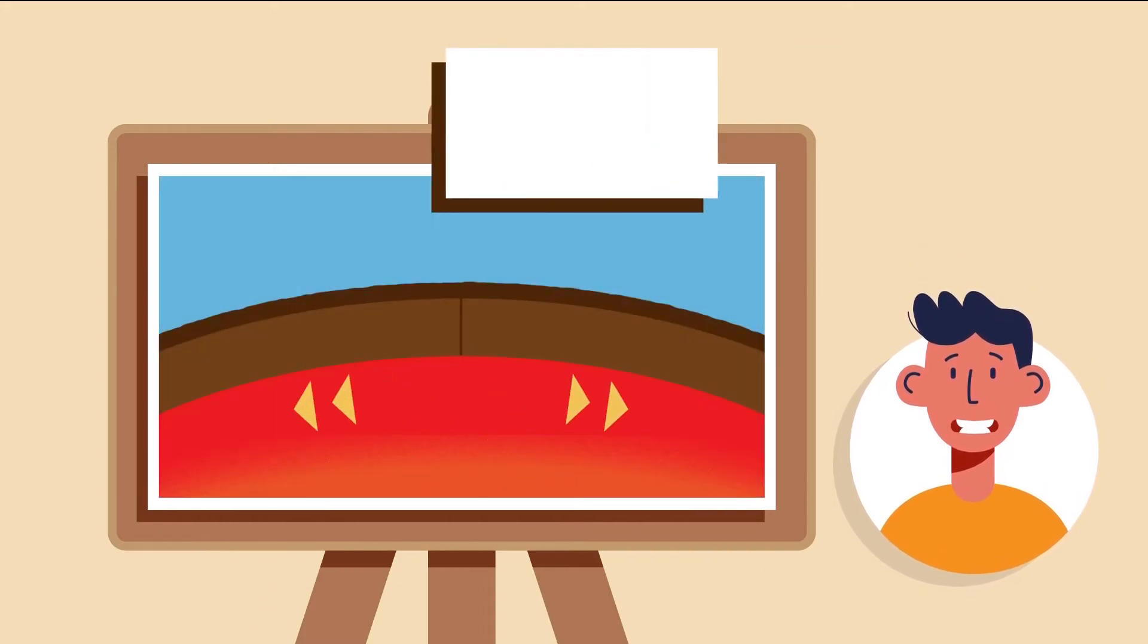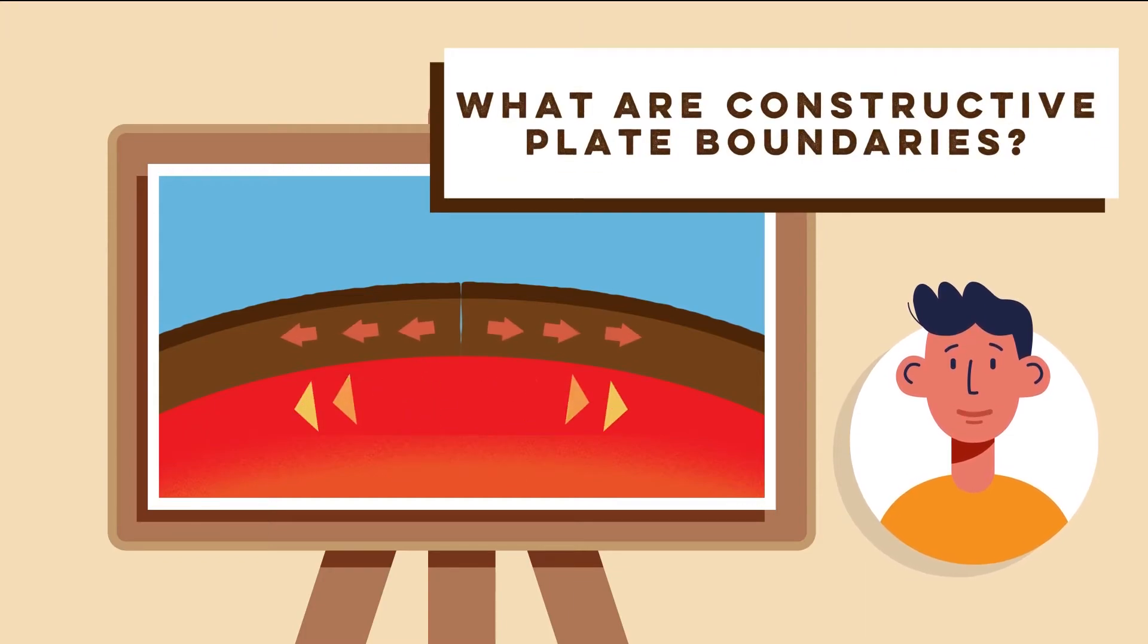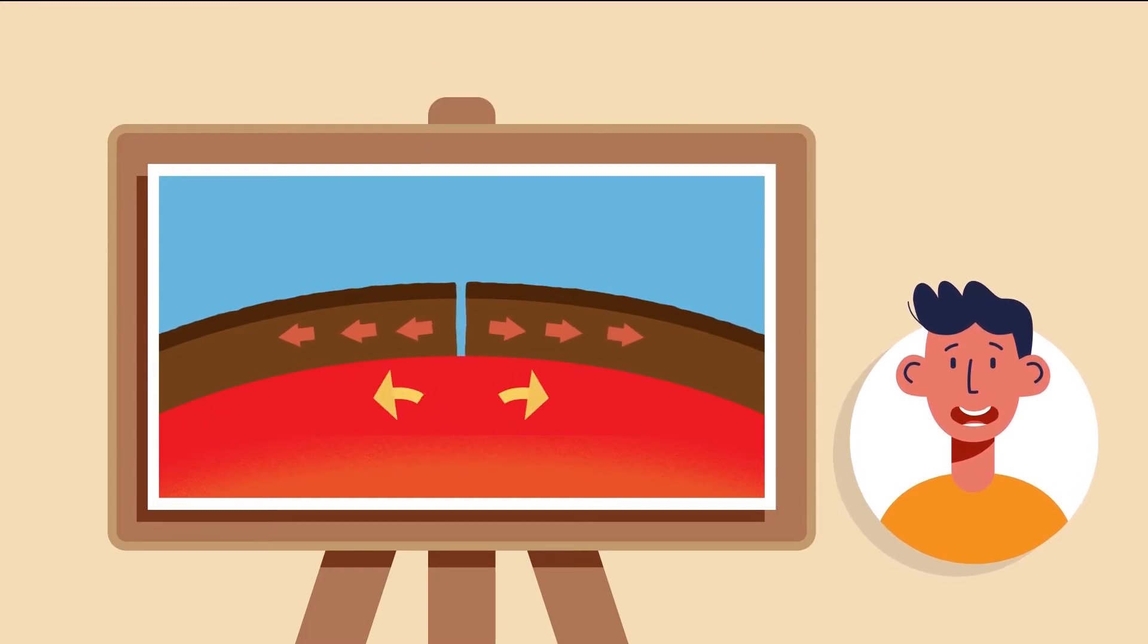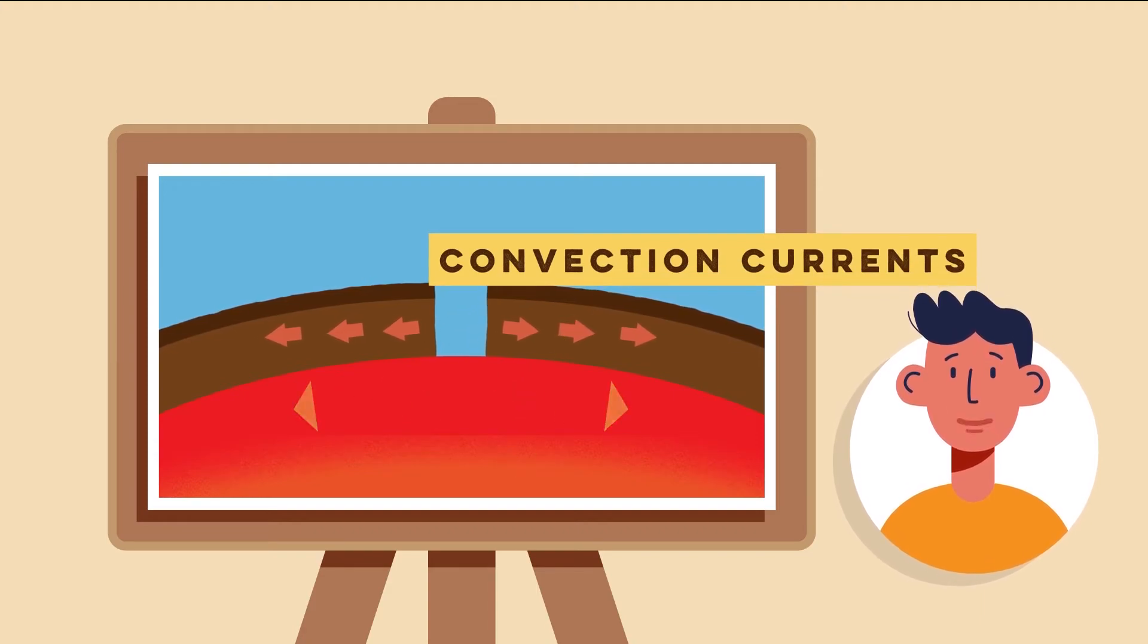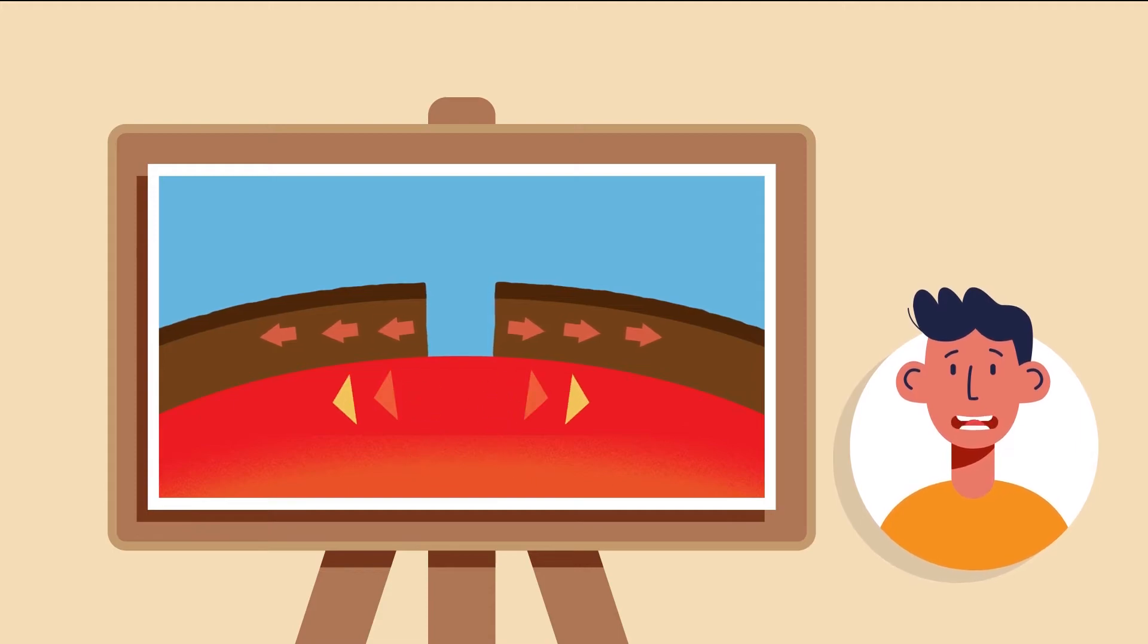Step 1: What are constructive plate boundaries? Constructive plate boundaries occur where two tectonic plates move apart from each other due to convection currents. This movement creates a gap between the plates.